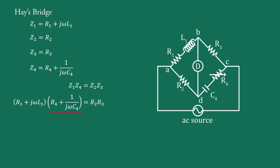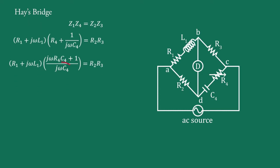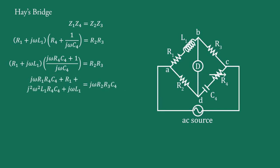We will simplify these brackets. Therefore, (R1 + j·omega·L1) into (j·omega·R4·C4 + 1) upon j·omega·C4 equals R2·R3. Transferring j·omega·C4 to the right side and expanding the brackets, we get: j·omega·R1·R4·C4 + R1 + j²·omega²·L1·R4·C4 + j·omega·L1 equals j·omega·R2·R3·C4.